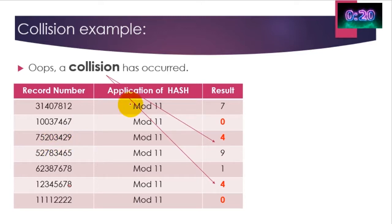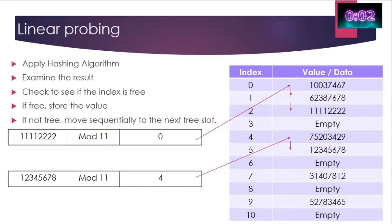You'll see here that we have two records that produce the same hash value. So this record here going through modulo 11 might produce a four, and this record number here through modulo 11 produces a four. Or indeed, you can have a look at the other example where you might produce the remainder of zero. Well, how do we actually fix this? Well, it's dead easy.